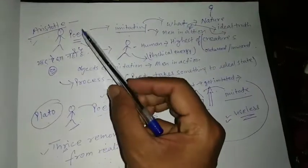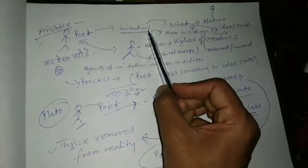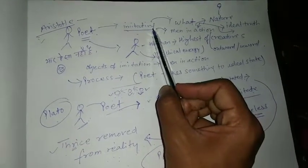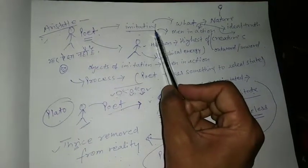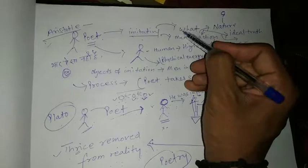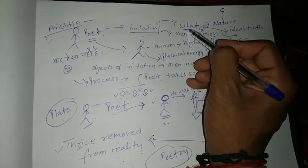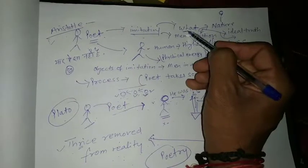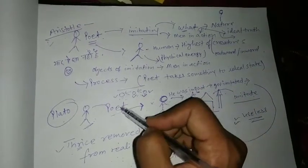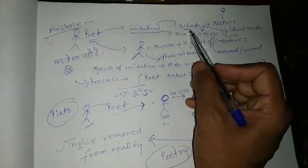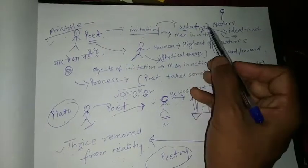Now let's come to Aristotle. Aristotle says simply that yes, the poet imitates or he is imitating things, but what he imitates, this is the question that is important. Here is the difference. He is saying simply he is imitating, and here he is saying what he imitates. He imitates nature.